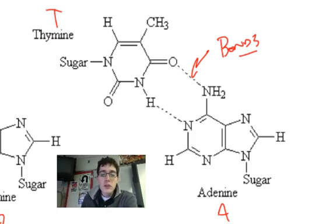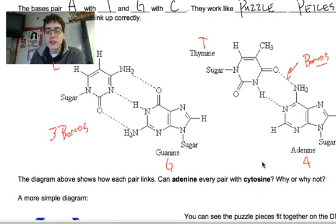So the diagram above shows how each pair links. Can the adenine ever pair with cytosine, then why or why not? So I'd like you to just jot down a brief answer in your notes on what we just talked about a second ago.